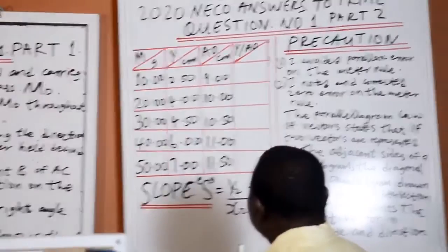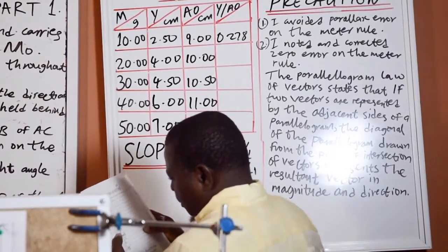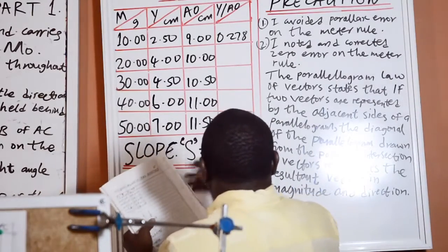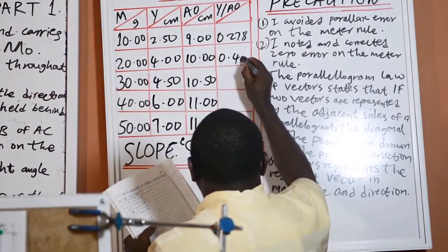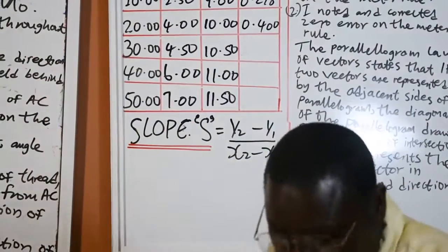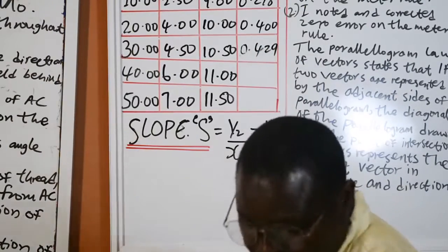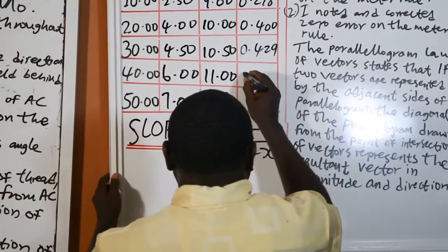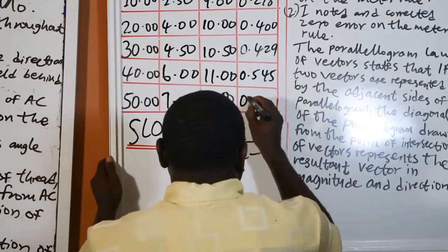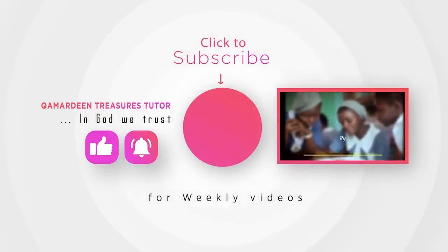2.5 over 9 is equal to 0.278. 4 over 10 will give us 0.400. 4.50 divided by 10.50 is equal to 0.429. 6 divided by 11 is equal to 0.545. 7 divided by 11.5 is equal to 0.609.